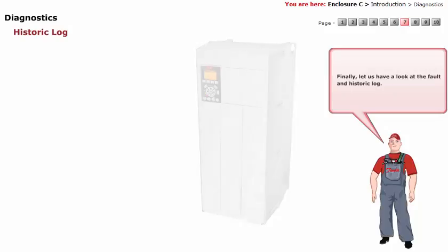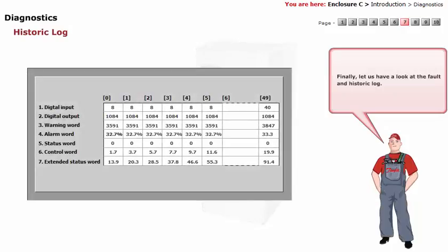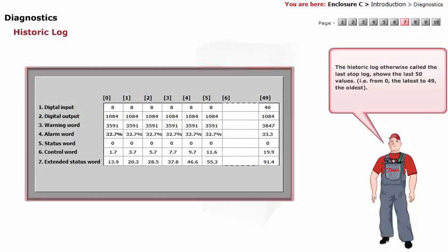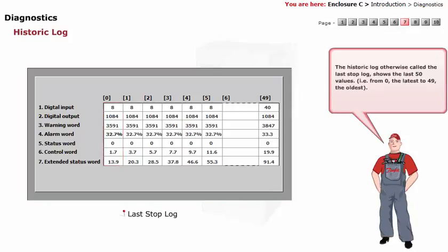Finally, let us have a look at the fault and historic log. The historic log, otherwise called the last stop log, shows the last 50 values. That is from 0, the latest, to 49, the oldest.